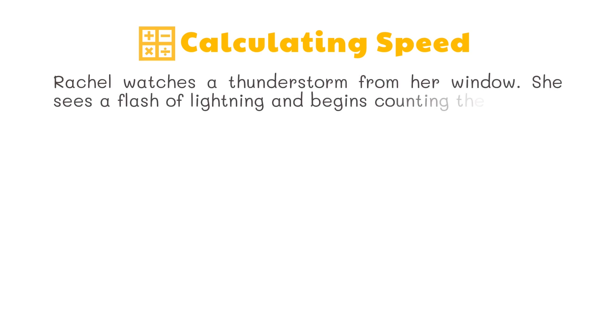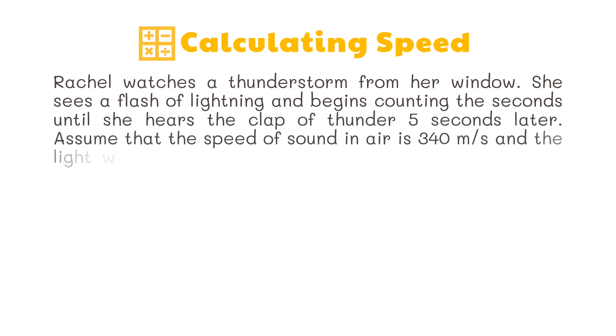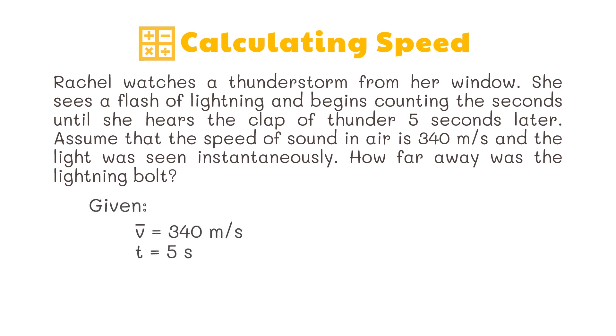Let's try calculating for speed. Rachel watches a thunderstorm from her window. She sees a flash of lightning and begins counting the seconds until she hears the clap of thunder five seconds later. Assume that the speed of sound in air is 340 meters per second and the light was seen instantaneously. How far away was the lightning bolt? So we have the given values of 340 meters per second and 5 seconds.